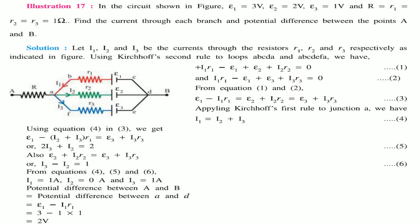In the given circuit, E1=3V, E2=2V, E3=1V, and resistances R1=R2=R3=1Ω. We need to find the current through each branch and the potential difference between points A and B. Assuming I1 flows from A, which splits into I2 and I3. Applying Kirchhoff's junction rule at point A: I1 = I2 + I3.